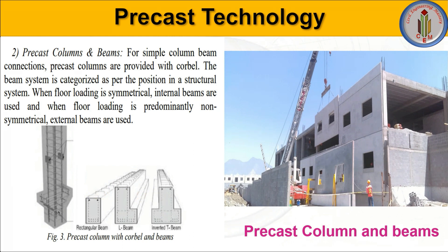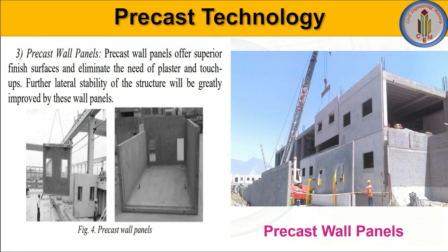Next are precast columns and beams. These are also cast in the manufacturing unit and transported to site for assembly. For a simple beam-and-column connection, precast columns are provided with corbels. The beam systems are categorized based on position in the structural system — when floor loading is symmetrical, internal beams are used, and when floor loading is non-symmetrical, external beams are used. In this way, beams and columns are precast in the manufacturing unit according to the structural system.